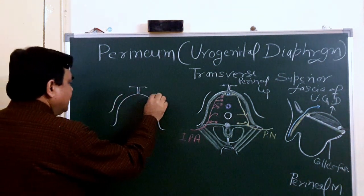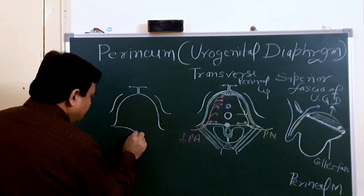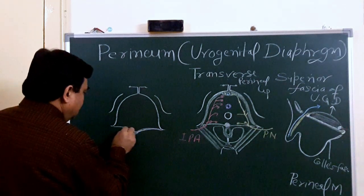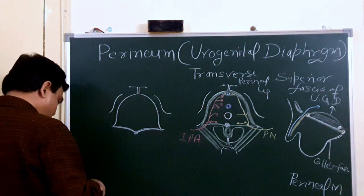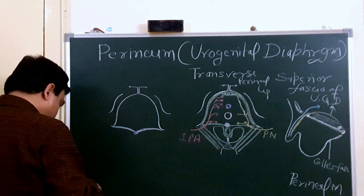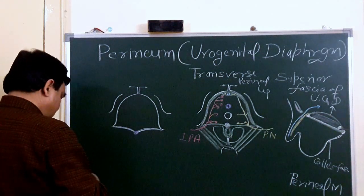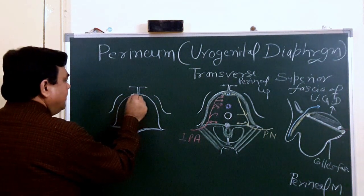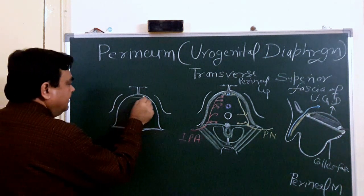Here is your pubic ramus. The sphincter urethra is here, and here is the perineal body. This is the arcuate pubic ligament.